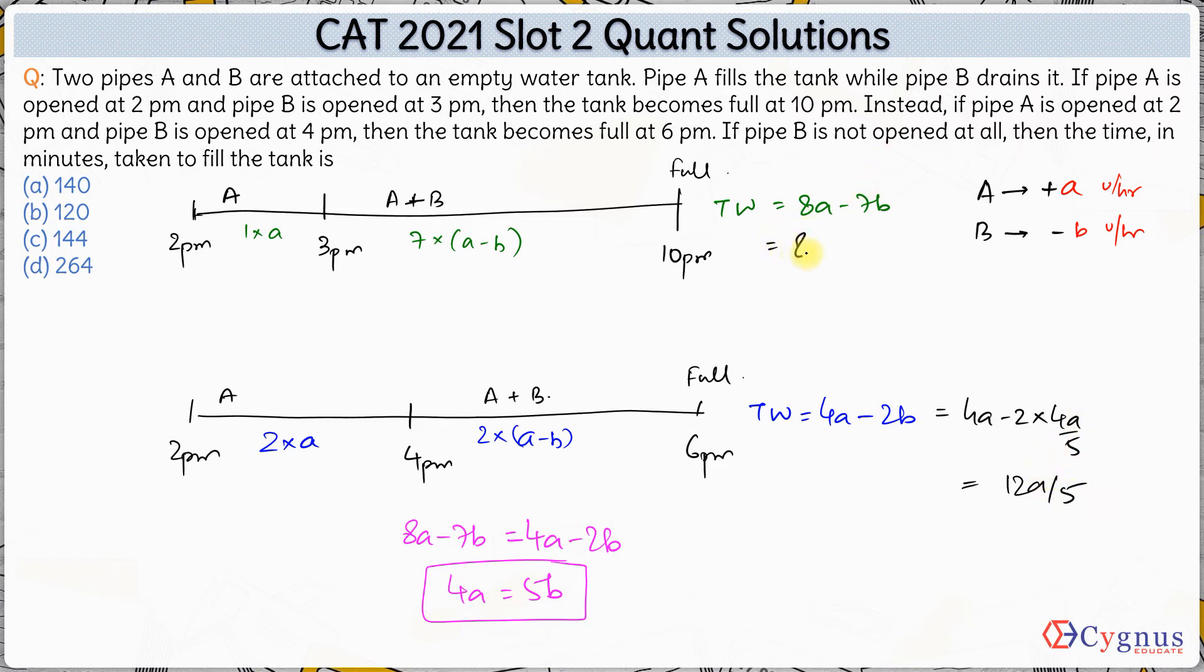Even if you substitute B over here, 7 times of 4A by 5, so this is 40 minus 28 which is again 12A by 5. Obviously work done is going to be same.